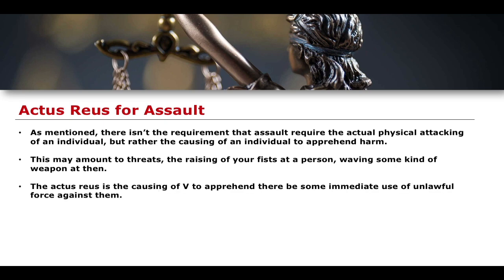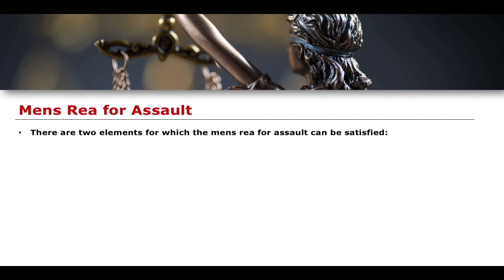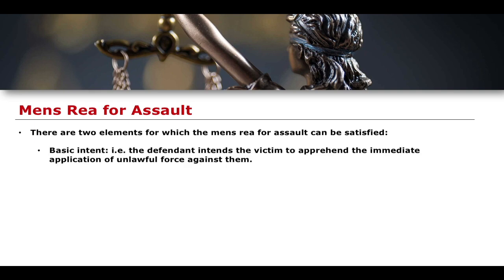The actus reus of this crime is the victim being caused to apprehend that there is some immediate use of unlawful force against them — they believe there will be an immediate use of unlawful force against them right now. When it comes to the mens rea for assault, there are two ways this can take place. First, through basic intent: the defendant intends the victim to apprehend the immediate application of unlawful force. This is easily satisfied — if I raise my fist to someone, I intend by that very action for the victim to apprehend that I'm going to apply unlawful force against them.